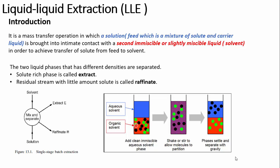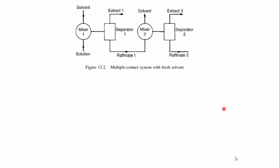In a simple representation of liquid-liquid extraction, the solute is shown in black and the carrier liquid in green. After mixing with the solvent and allowing the mixture to settle, the bottom phase — the raffinate — contains no or a small amount of solute, while the upper phase is the extract. These two liquid phases can be separated by physical means based on their density difference.